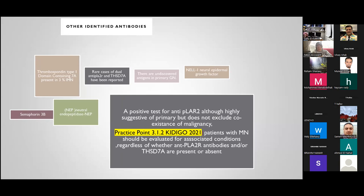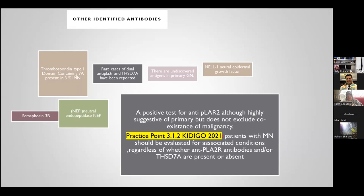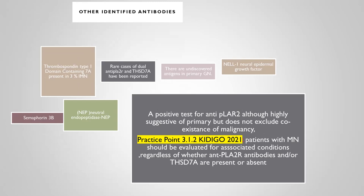A positive anti-PLA2R test is highly suggestive of primary membranous GN. If PLA2R is negative, the patient may have another antibody that we lack an assay for, or it may fall under undiscovered antibodies. Importantly, even a PLA2R-positive patient does not exclude co-existent malignancy — NEL1 has been associated with malignancy. KDIGO 2021 recommends that all patients with membranous GN be evaluated for associated conditions regardless of whether antibodies are present or absent.